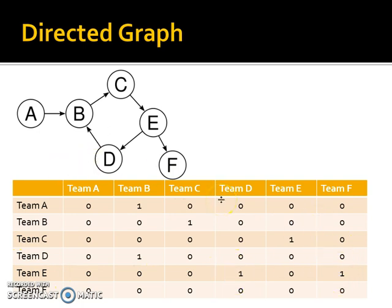So it's not symmetrical on this one. The ones represent where there is an arrow from this team to that team. So row to column. So there's two examples of an adjacency matrix.